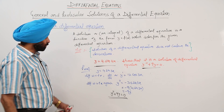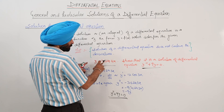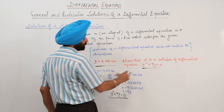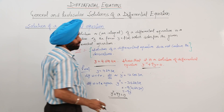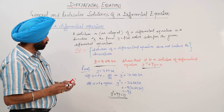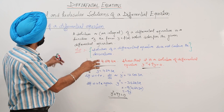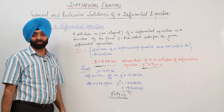So y = 4 sin(3x) is a solution for the differential equation y'' + 9y = 0. This demonstrates the concept of a solution of a differential equation.